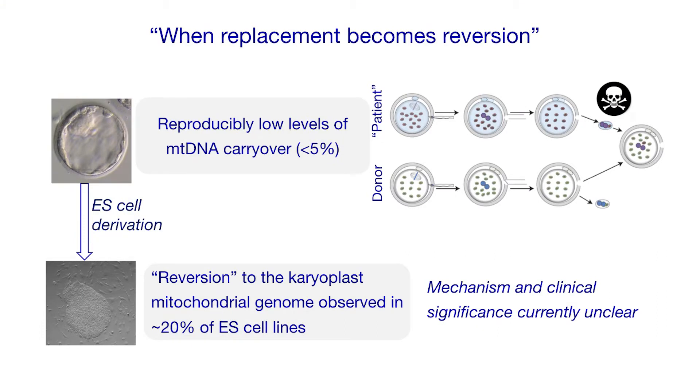Astonishingly, when we make ES cells from these embryos, about 20% of the ES cell lines we generate show that this tiny fraction of mitochondrial DNA actually takes over. At the moment we don't know how that's happening, and moreover we don't know the clinical significance — we don't know whether it's just an artefact of ES cells cultured in vitro, or whether it would actually happen during development in vivo. Our ongoing research is very much focused on finding ways of eliminating this mitochondrial DNA — in other words, getting the egg to recognise it as if it were the sperm mitochondria, and just eliminate it before it can cause any problems.